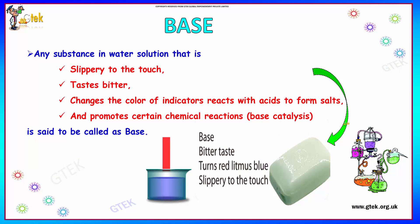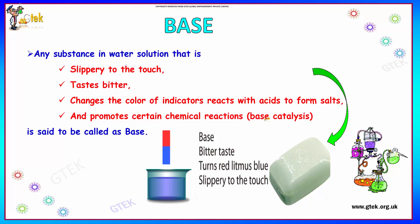Now let's talk about the properties of a base. A base is slippery to touch. It tastes bitter. It changes the color of indicators — it turns red litmus paper to blue. It reacts with acids to form salts and promotes certain chemical reactions.